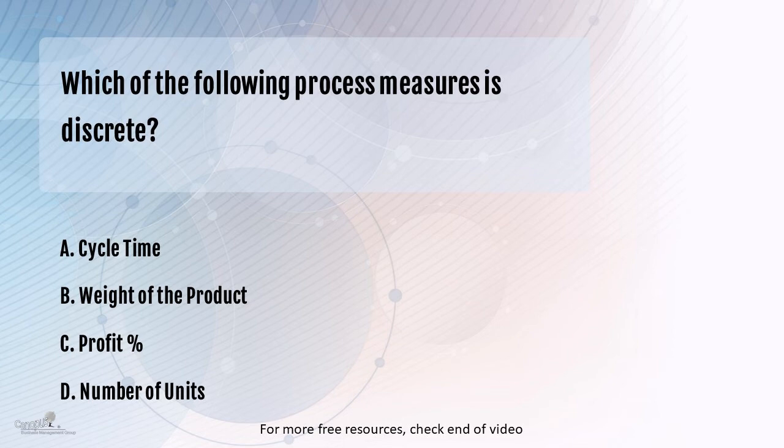The last option, which is the number of units, is usually counted. You don't measure the number of units, you count the number of units, right? And when you break it into smaller units, for example, if you have two units, does something like 2.2 units make sense to you? No, right?